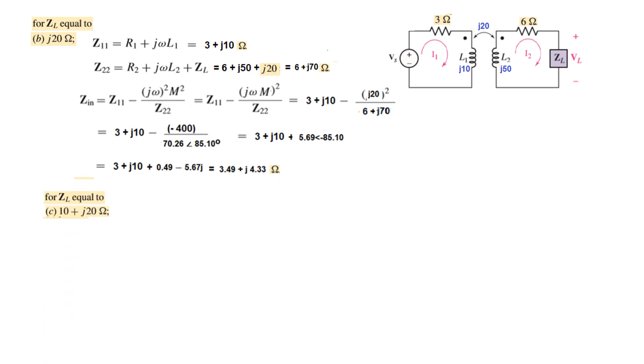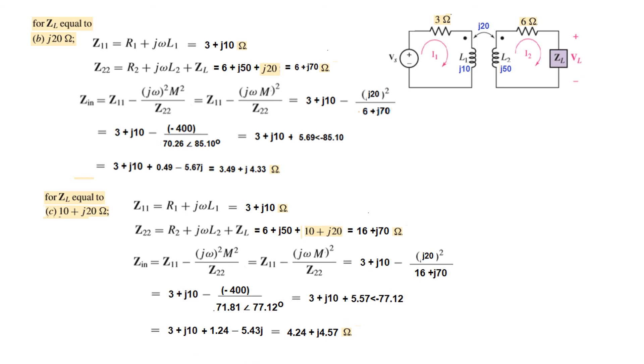The third part is when ZL is 10 plus j20. Exactly the same thing. Z11 remains same, Z22 changes. ZL is represented by 10 plus j20. Solving, we get this value for Z22. Now plugging into the main formula with this Z22, solving step by step, this is the final answer.